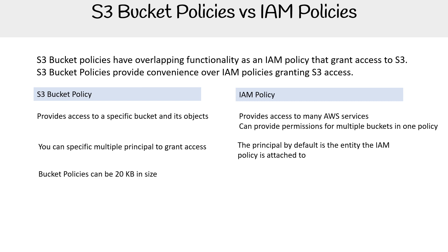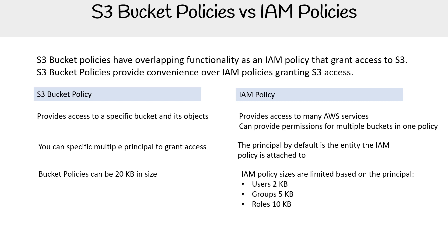A bucket policy can be up to 20 kilobytes in size, whereas an IAM policy size is based on its principal — if it's a user, it's 2 kilobytes; if it's a group, it's 5 kilobytes; if it's a role, it's 10 kilobytes. Sometimes bucket policies are better because they have that larger file size for one particular bucket.